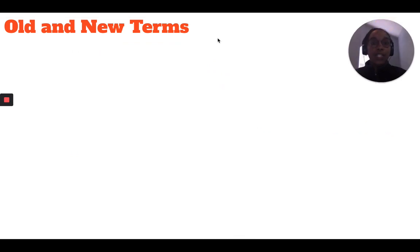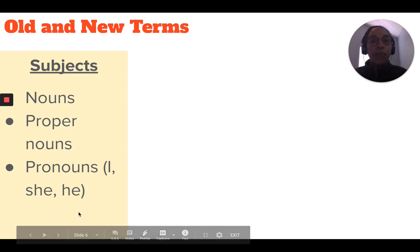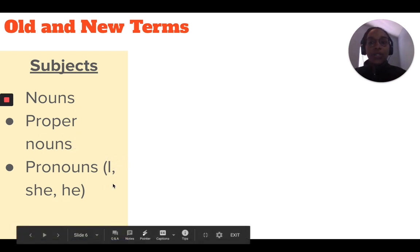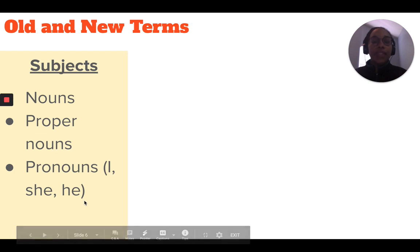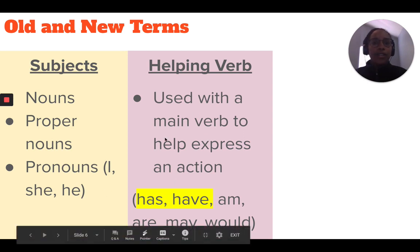Before we talk about the present perfect tense, there are a few terms you need to know — some old and some new. The first one is subjects. A subject could be a noun, a proper noun, or a pronoun. Pronouns are words that replace proper nouns and nouns, and include I, she, he, they, him, and so on. You're also going to need to know what a helping verb is. Helping verbs are verbs that are used with a main verb to help express an action.